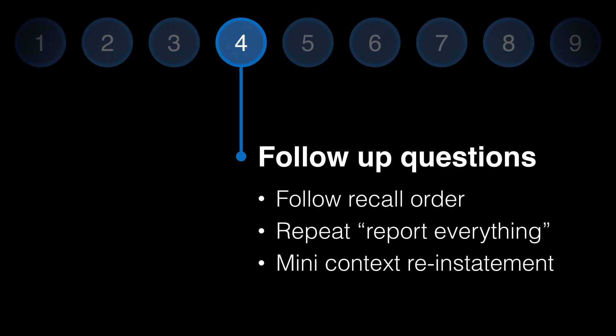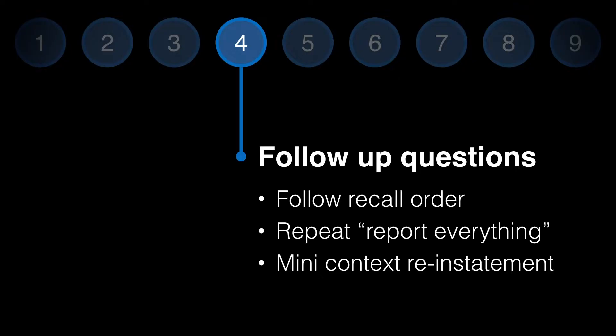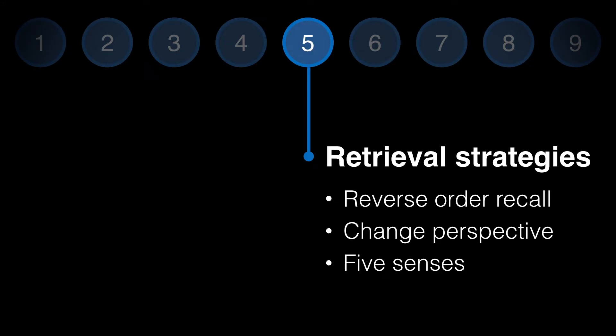The 'report everything' instruction should be repeated here, and it should be emphasized that it's okay for the witness to say they don't know an answer or if they don't understand the question being asked. Mini context reinstatement is used to help the witness create a mental image of more specific details of the event. Open questions are used to initiate further free recall of a particular segment of the account before further probing or using a closed question. The interviewer should also avoid topic copying — jumping from one topic to another — and each topic should be exhausted before moving to the next.